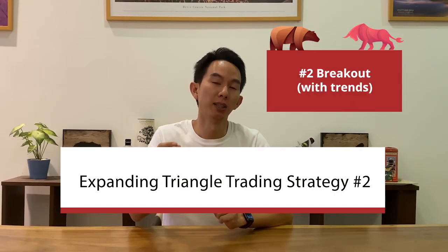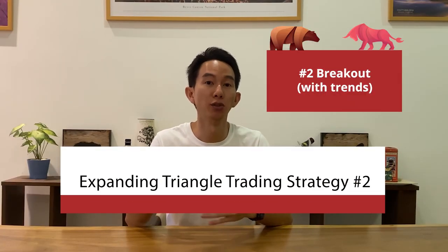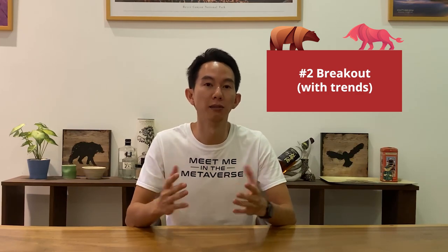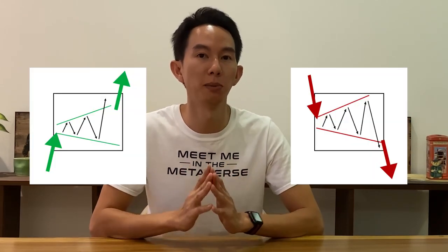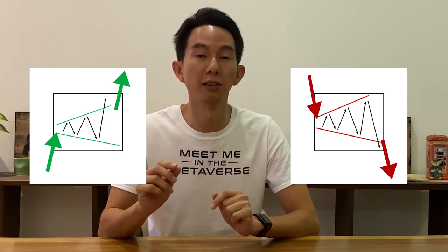The second strategy is to treat the expanding triangle as a continuation pattern and look for a breakout in the same direction as the prior trend. Personally, I do not favor this strategy as I feel the odds are not as good and it is hard to find many instances of a successful breakout. The probability of reversal is higher due to the uncertainty of the pattern. As such, I was unable to find a good chart example and have simulated a price breakout instead.